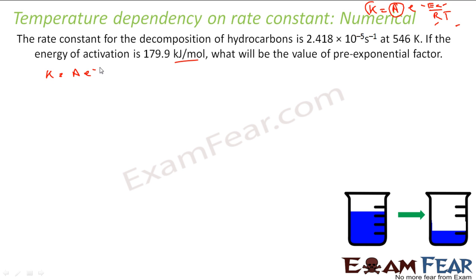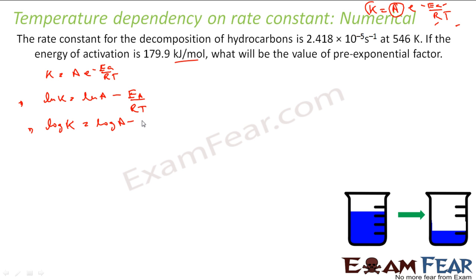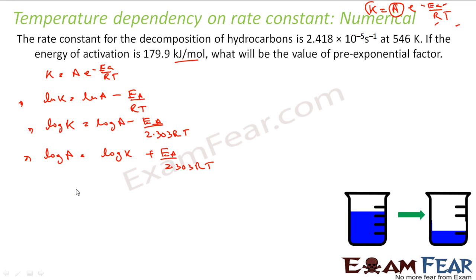So we have k is equal to A e to the power minus Ea by RT. Put log on both sides. ln k is nothing but ln A minus Ea by RT. If you want to put log, you can do that also. So log k is equal to log A minus Ea by 2.303 RT. We know that to convert ln to log, we have to take care of this 2.303 factor. We have to find A, so let's put log A on the left-hand side. It's nothing but log k plus Ea by 2.303 RT.